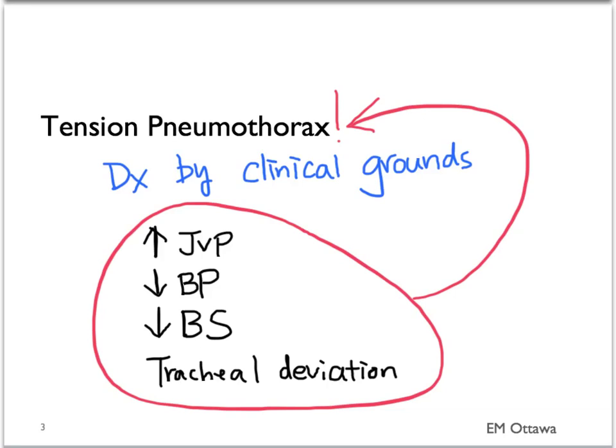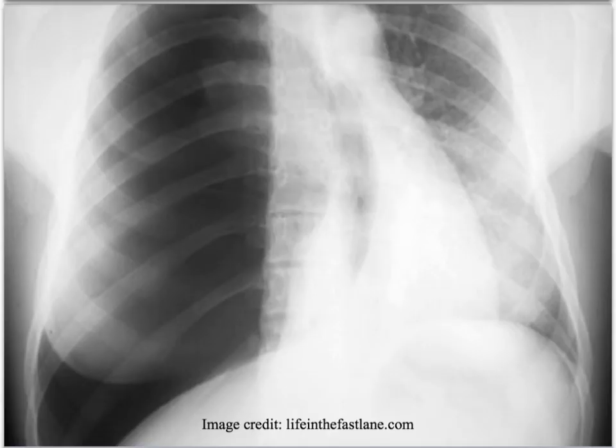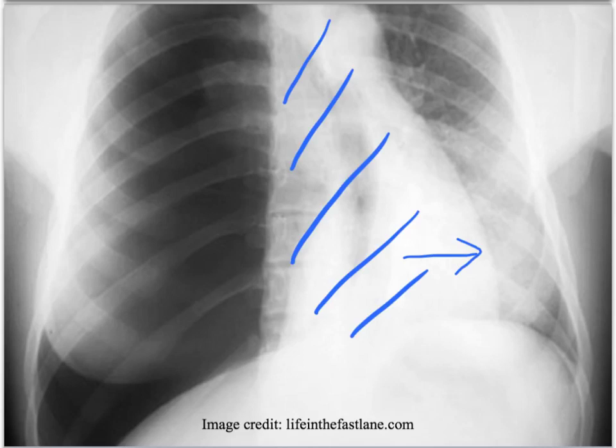If you did do an X-ray, this is what it would look like. You notice on this X-ray the mediastinum is significantly shifted to the left side. Notice the almost completely collapsed lung on the right side. Again, this is a chest X-ray you do not wish to see. You will want to fix the patient before they get to this point.